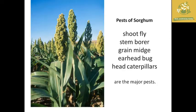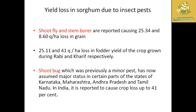I am going to tell you about the pest of sorghum and mainly about the major pest damage caused by insects in sorghum. First, we need to know some general information on yield loss in sorghum due to insect pests. Shoot fly and stem borer are reported to cause around 25.34 and 8.60 quintals per hectare loss respectively.